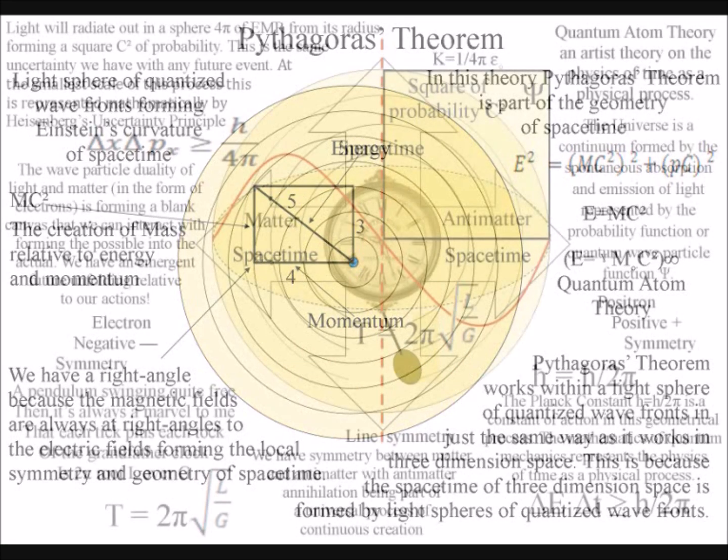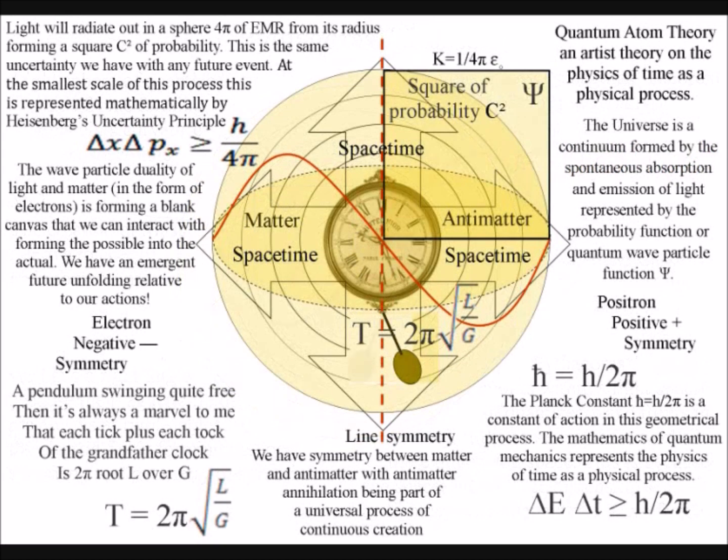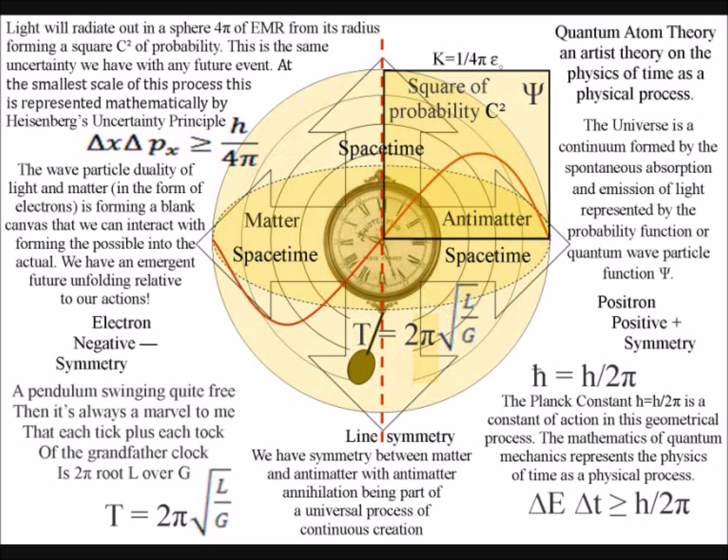The same squaring principle can be seen in quantum mechanics with the quantum wave-particle function or probability function, where we have to square the amplitude to get the probability. Therefore we can see there is something running through the whole of physics, from the very small scale of quantum mechanics to the force of gravity and the movement of the planets. What can this something be?